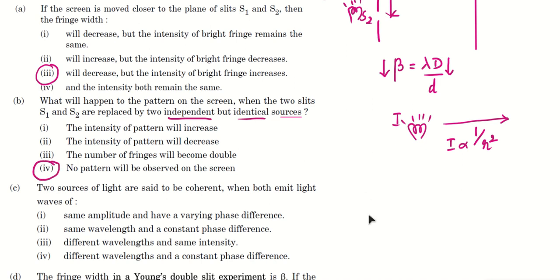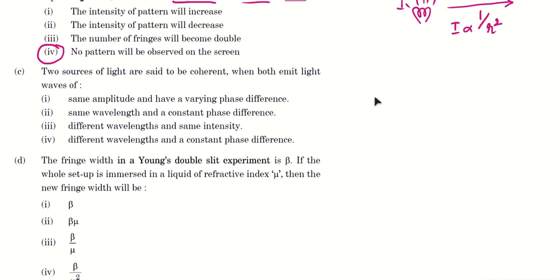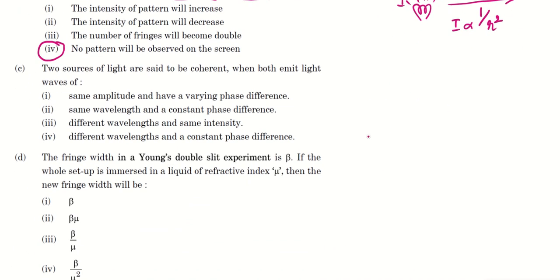Let's read the third one. Two sources of light are said to be coherent when both emit light waves off. So when do we say two sources are coherent?